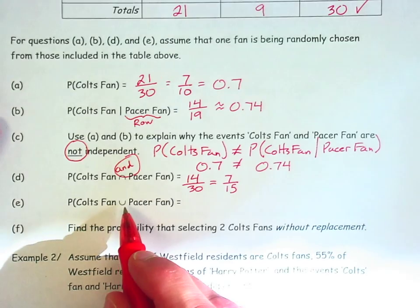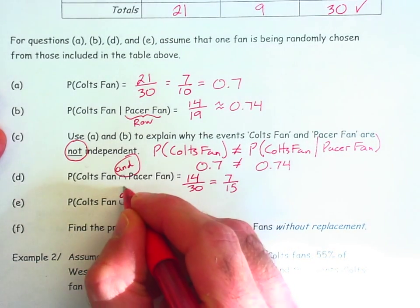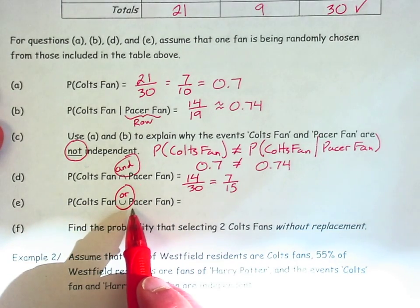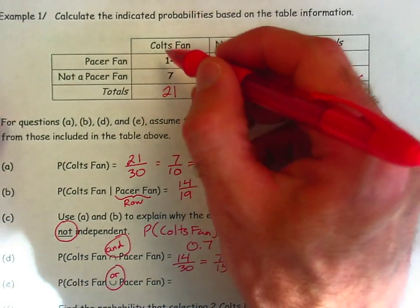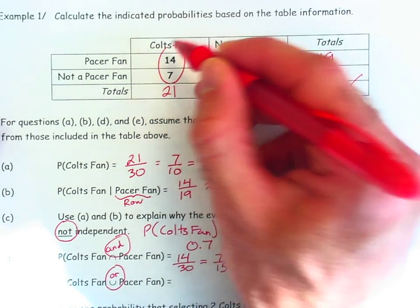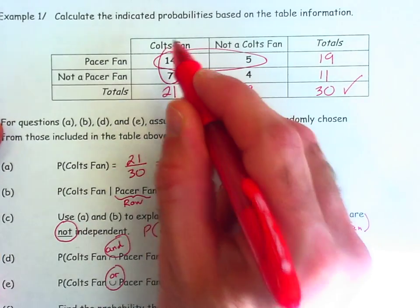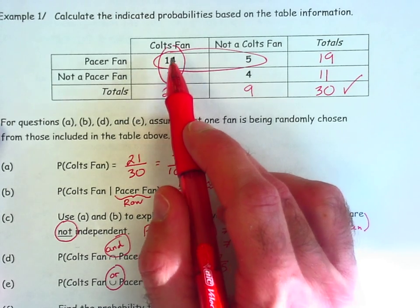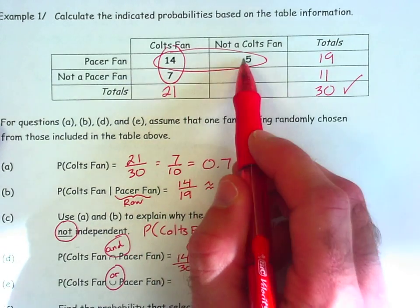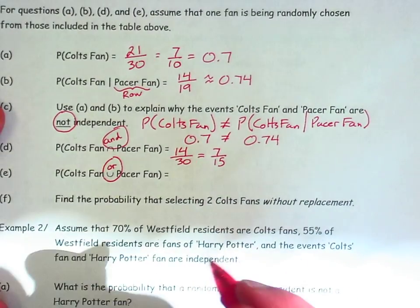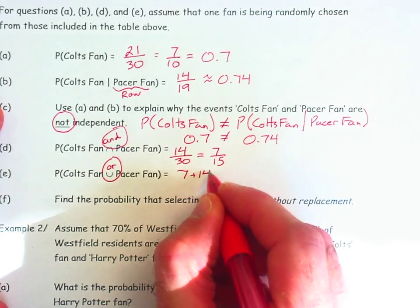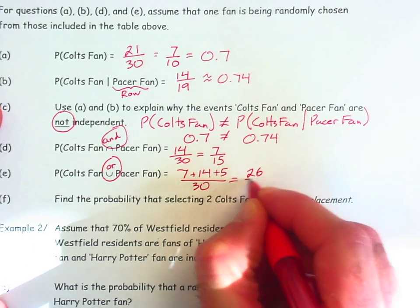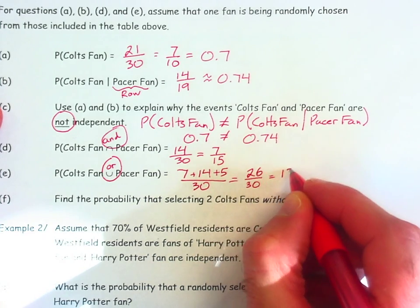So the union symbol makes this an or question. So I am interested in selecting an individual who is a Colts fan or a Pacer fan. So I want to come back up to the table and I want to include all of the Colts fans or Pacer fans. But be careful. I don't want to double count the 14 Pacer fans that are also Colts fans. So in this question, I want to include the 7 and the 14 and the 5. Those are the subjects that I'm interested in accounting for. The 7 and the 14 and the 5 out of the total of 30. So that's 26 out of 30. Looks like 13 out of 15.